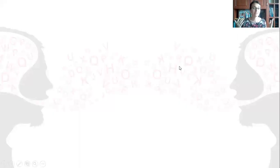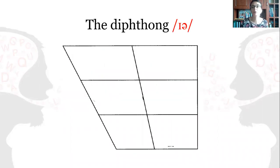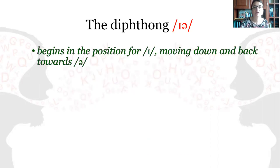Let's see how the centric diphthongs are articulated and begin with /ɪə/. This is the graphic representation of the movement happening, and we notice that the diphthong begins in the position for /ɪ/ and moves down and back towards /ə/. The lips are neutral.